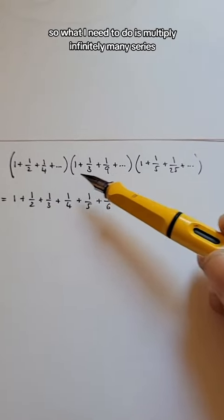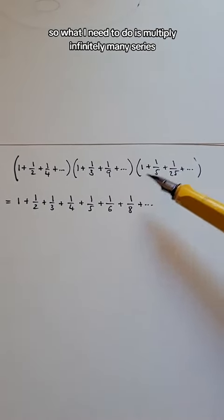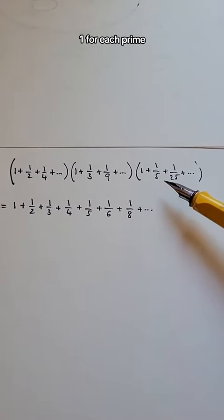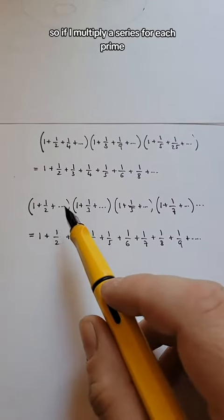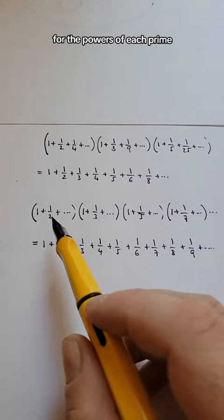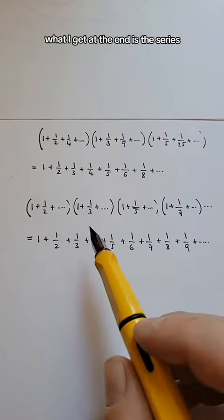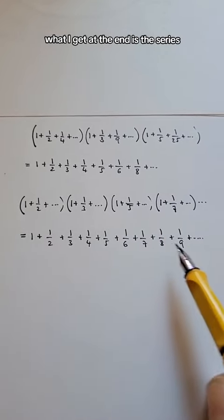So what I need to do is multiply infinitely many series, one for each prime. So if I multiply a series for each prime, for the powers of each prime, what I get at the end is this series, which is the harmonic series.